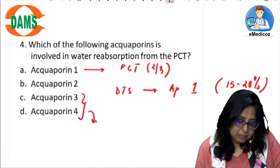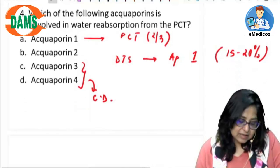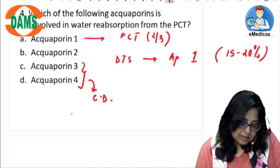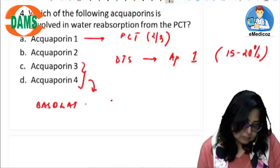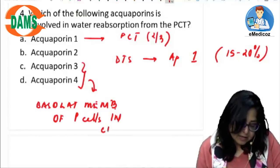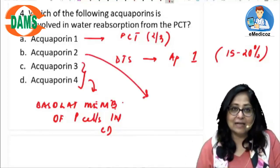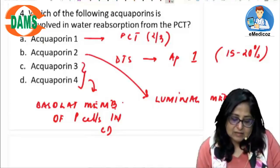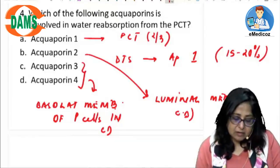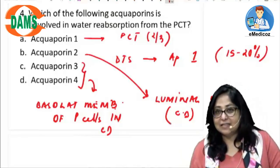Aquaporin 3 and 4 are present in the collecting duct, specifically on the basolateral membrane of the principal (P) cells. Aquaporin 2 is also in the collecting duct, but on the luminal membrane of the P cells. So to summarize: basolateral membrane has aquaporin 3 and 4; luminal membrane has aquaporin 2; PCT and descending thin segment have aquaporin 1.